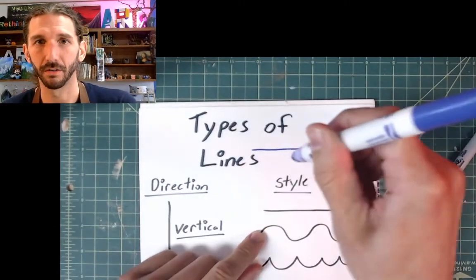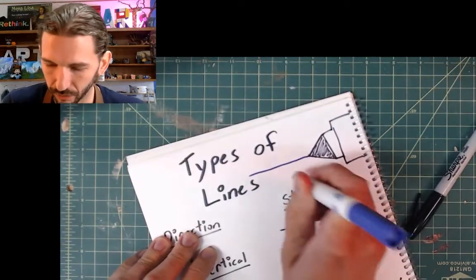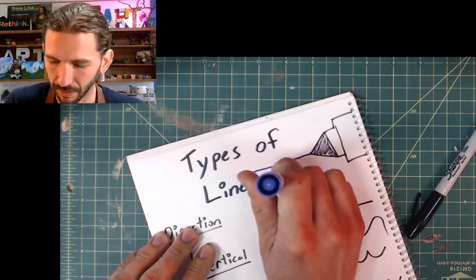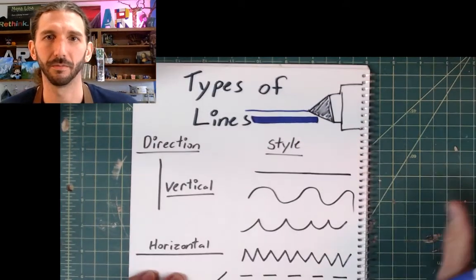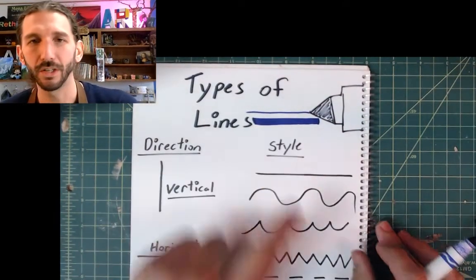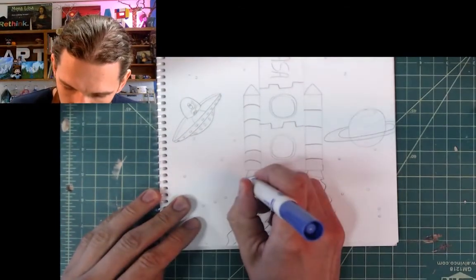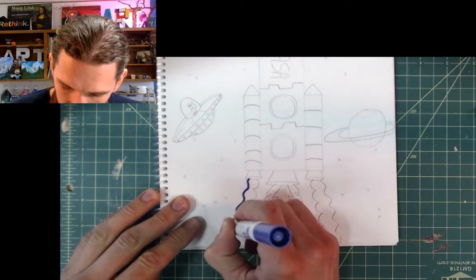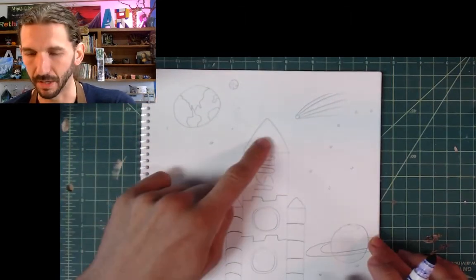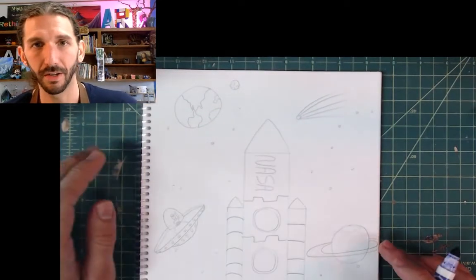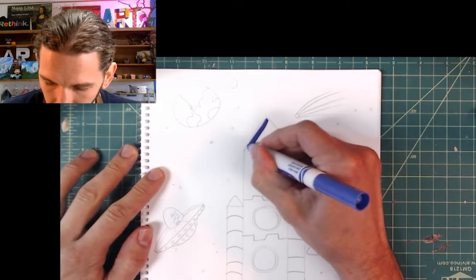If you turn your marker from the tip to the side — so instead of having your marker straight up and down, if you turn it on its side — you can get a thick line. Look how thick that is! When you're drawing on top of your lines, the tip of your marker might be really good for that. But if you want to color in a big area, using the side of your marker will help you color it a lot quicker.